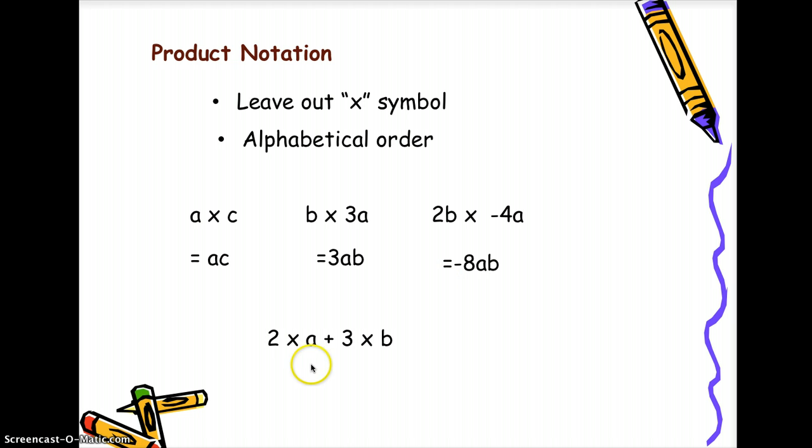Another example, 2 times a plus 3 times b. Using the order of operations, we multiply first before we add. So we're going to multiply 2 to a and we can just write it as 2a. Copy the plus symbol or the addition symbol 3 times b, removing the multiplication symbol which will become 3b.